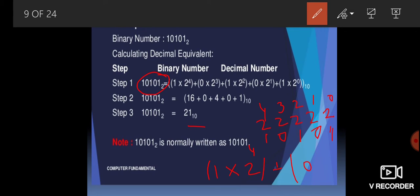Multiply each digit by its positional value: 0 multiplied by 2 raised to the power 3, plus 1 multiplied by 2 raised to the power 2, plus 0 multiplied by 2 raised to the power 1, plus 1 multiplied by 2 raised to the power 0. Then solving: 2 raised to the power 4 means 16, multiplied by 1 gives 16. 2 raised to the power 3 means 8, multiplied by 0 gives 0. 2 raised to the power 2 means 4.